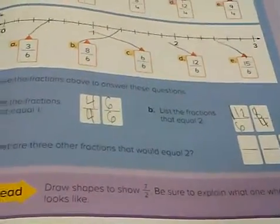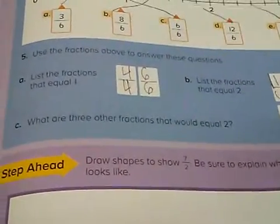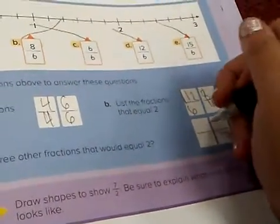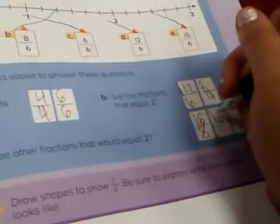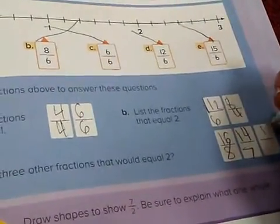What are three other fractions that would be equal to 2, so 3-1-4. What are three other fractions that would be equal to 2, so, 8-8, 16. I think I'm like 16-6, 16. So, 24, 24.